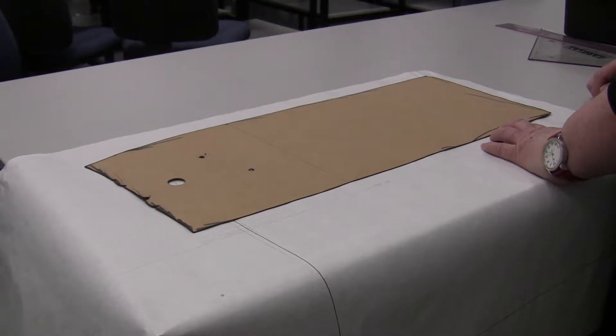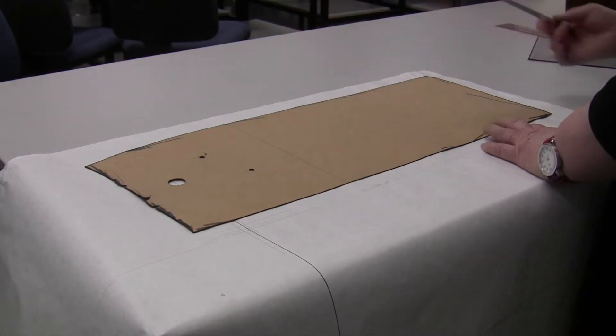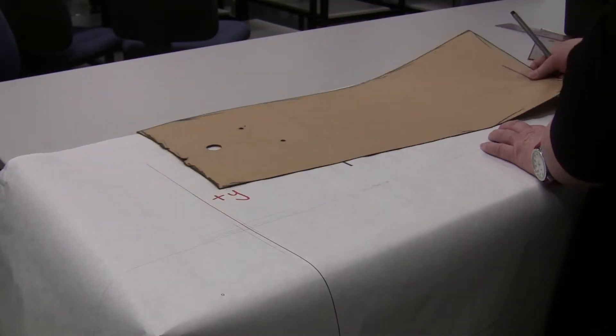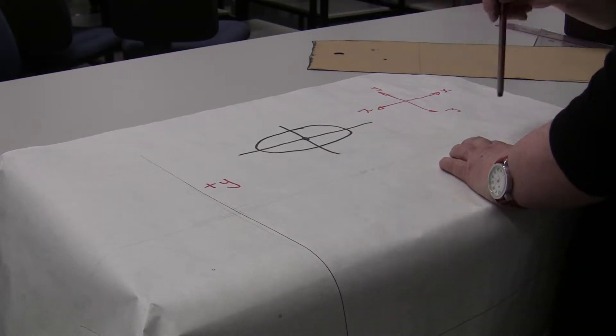We're going to grade the basic skirt block. We've got our block pattern here and around the body we're grading five centimeters. That's how much growth there is between one size and the next.